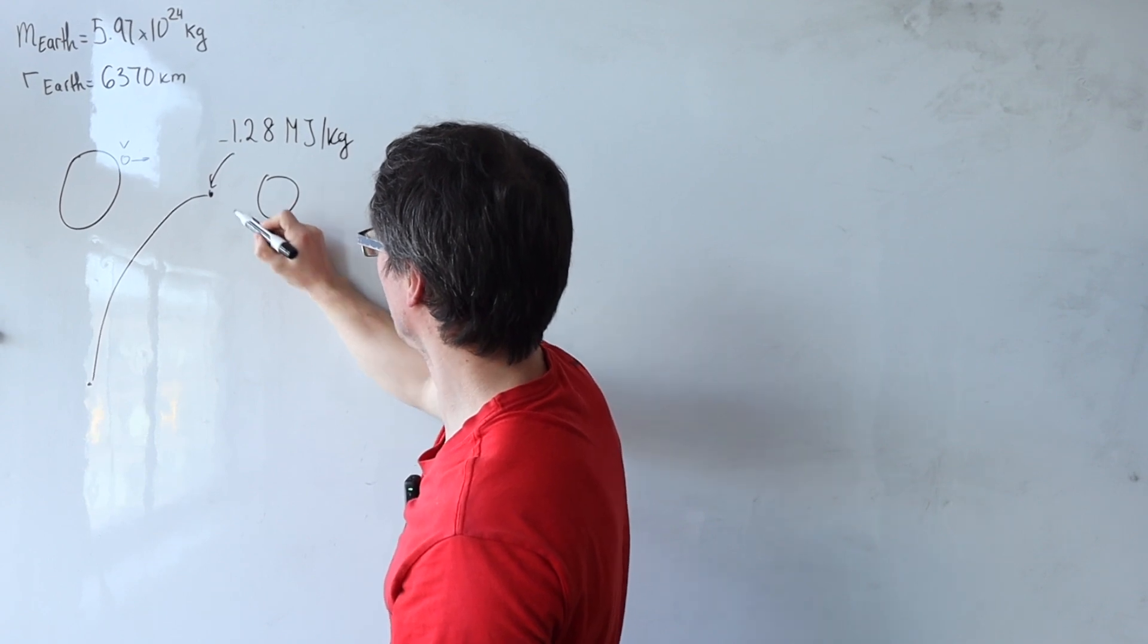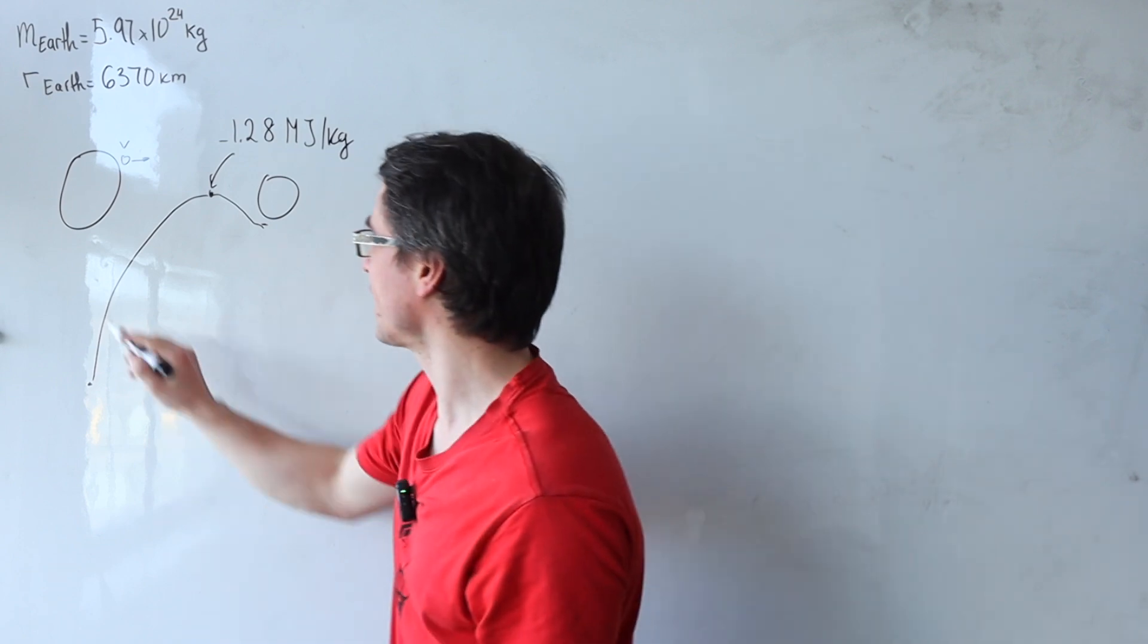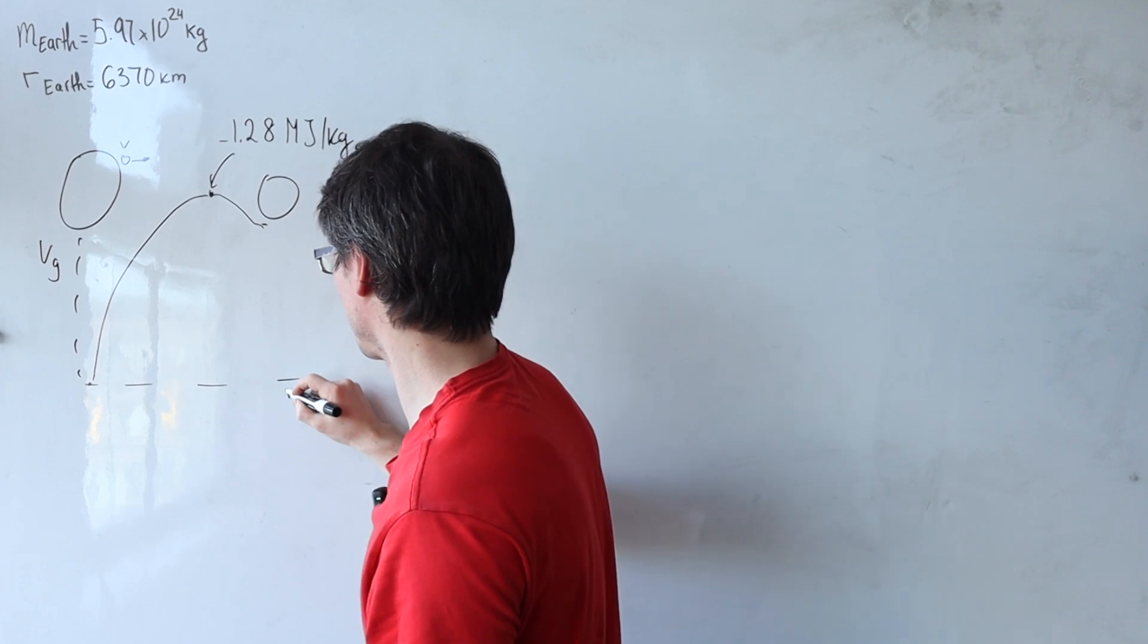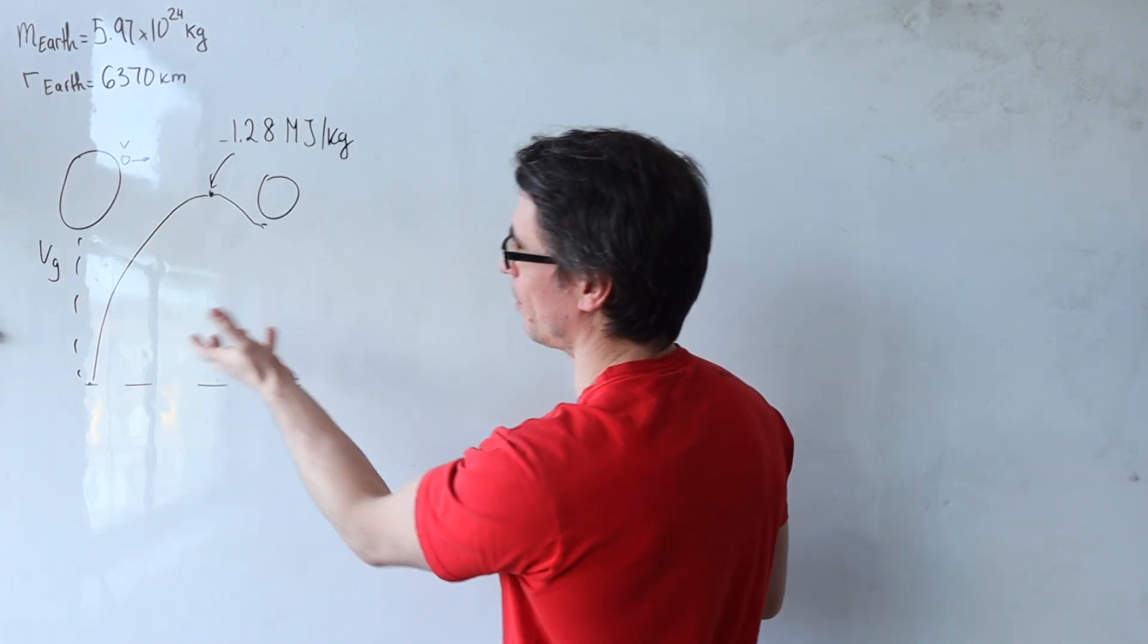And then on the Moon, it's also going to be pretty negative. I don't know, let's say something over here. You can kind of think of this as a graph of Vg, the gravitational potential with respect to distance r, with this region here being negative.